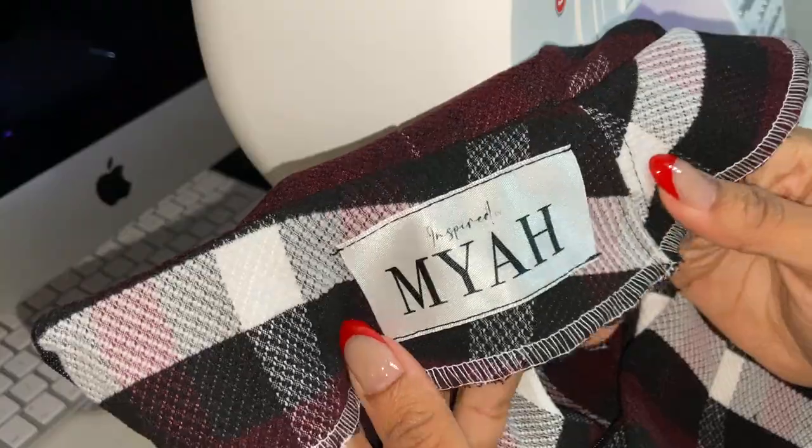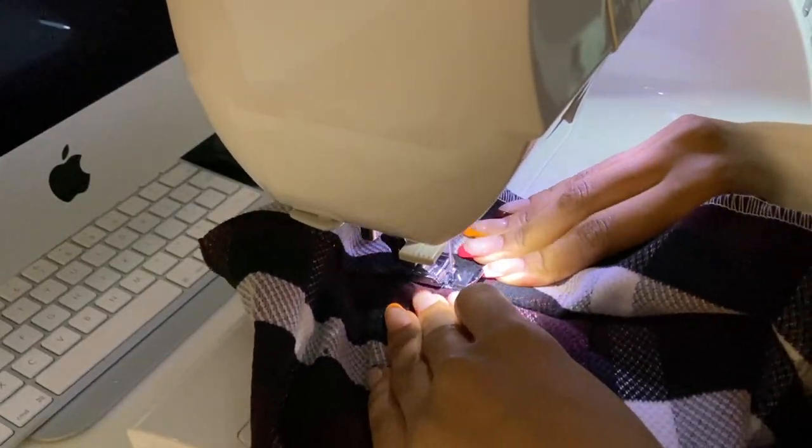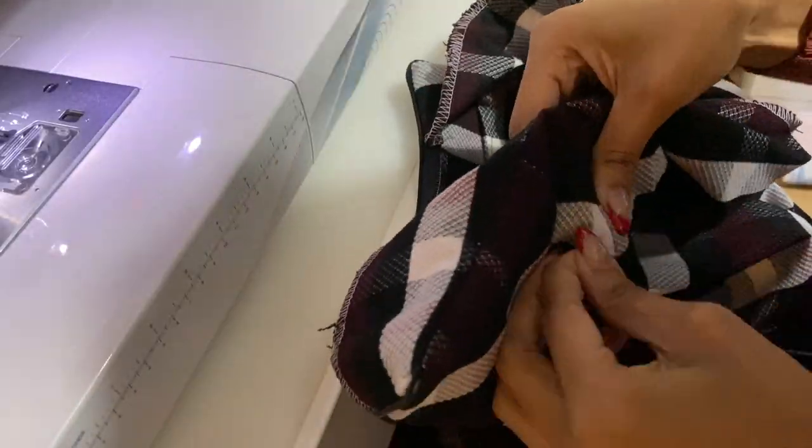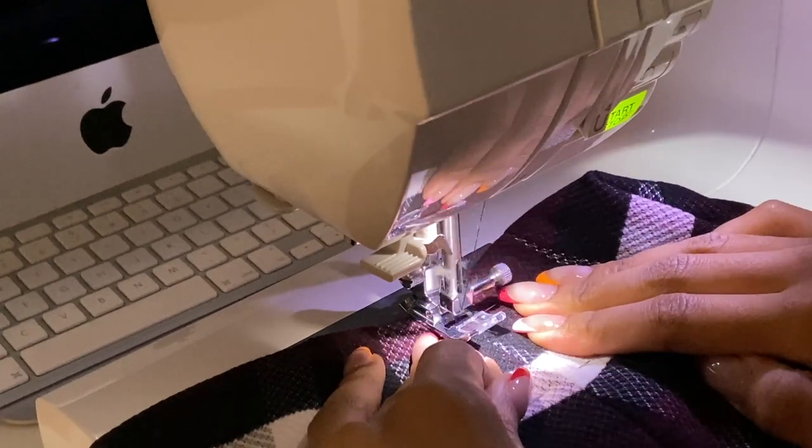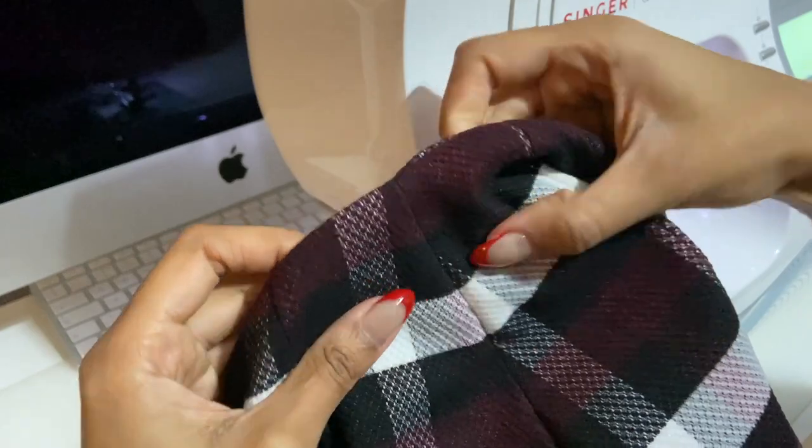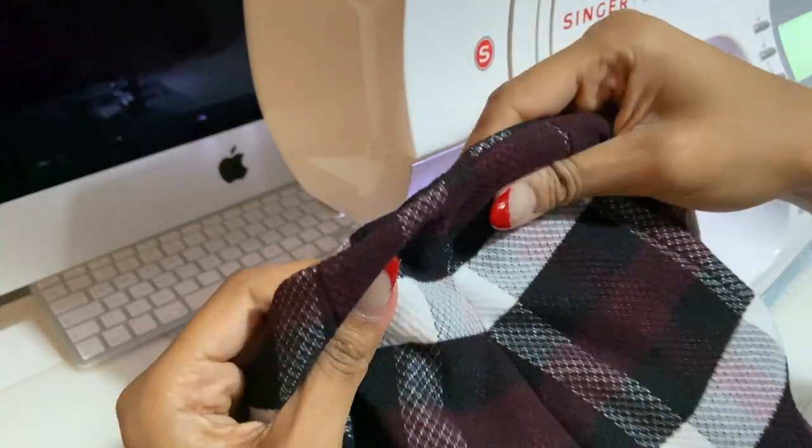The last couple details I did were topstitch the lining side of the waist facing seam allowance so that it reduces the chances of it rolling over, and then I also pinned the facing side seams to the skirt side seams and did a stitch in the ditch so that the facing doesn't move. The skirt is officially finished now, so let's move on to the final reveal.